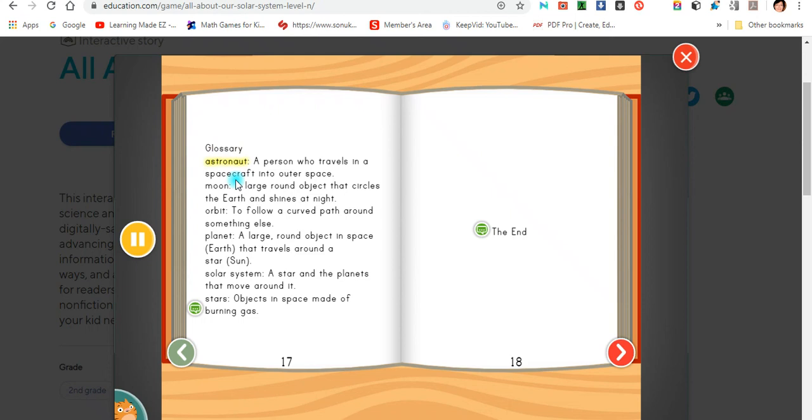Glossary. Astronaut: A person who travels in a spacecraft into outer space. Moon: A large round object that circles the Earth and shines at night. Orbit: To follow a curved path around something else. Planet: A large round object in space, Earth, that travels around a star, Sun. Solar System: A star and the planets that move around it. Stars: Objects in space made of burning gas.